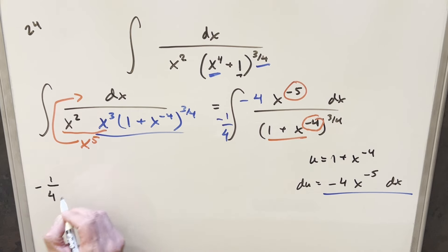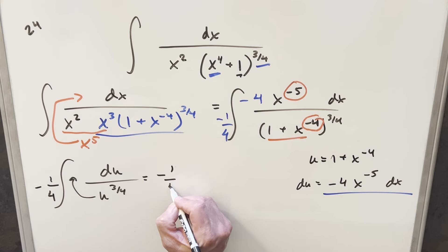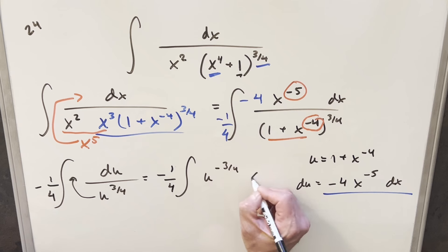So I'll have our minus 1/4th here, the whole numerator becomes du, and this thing is going to be just u to the 3/4ths. Well, I'll just bring this into the numerator, setting myself up for power rule of minus 1/4th in front, writing this as u to the minus 3 over 4 du.